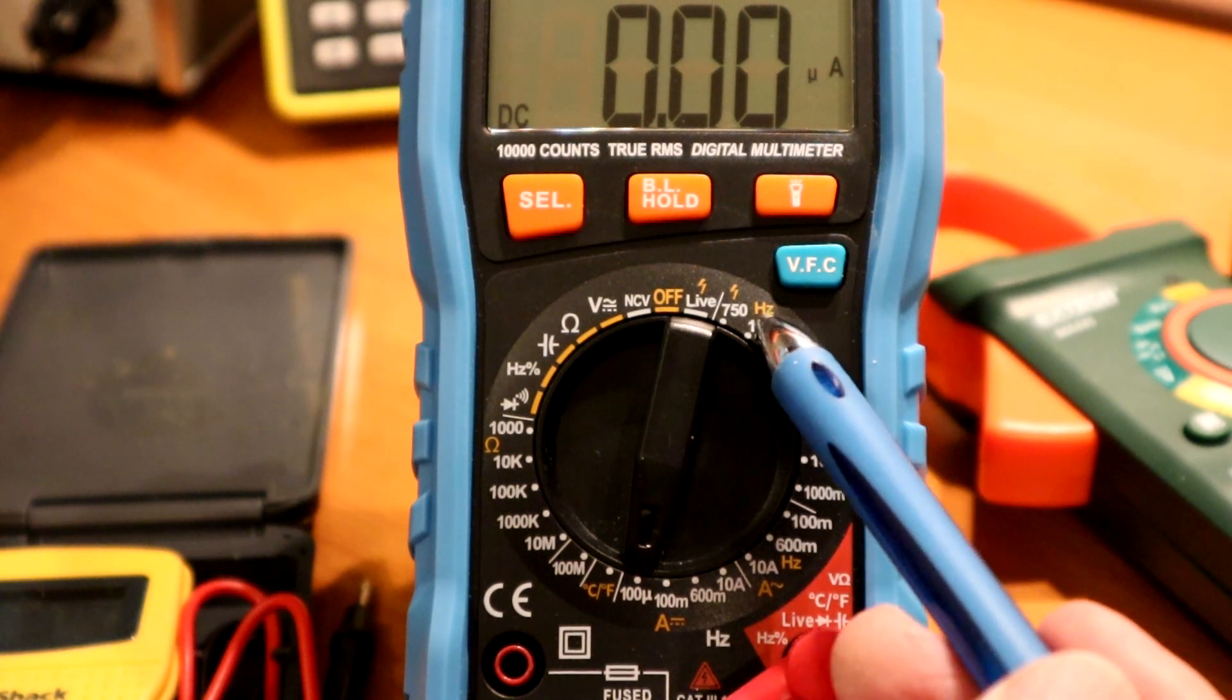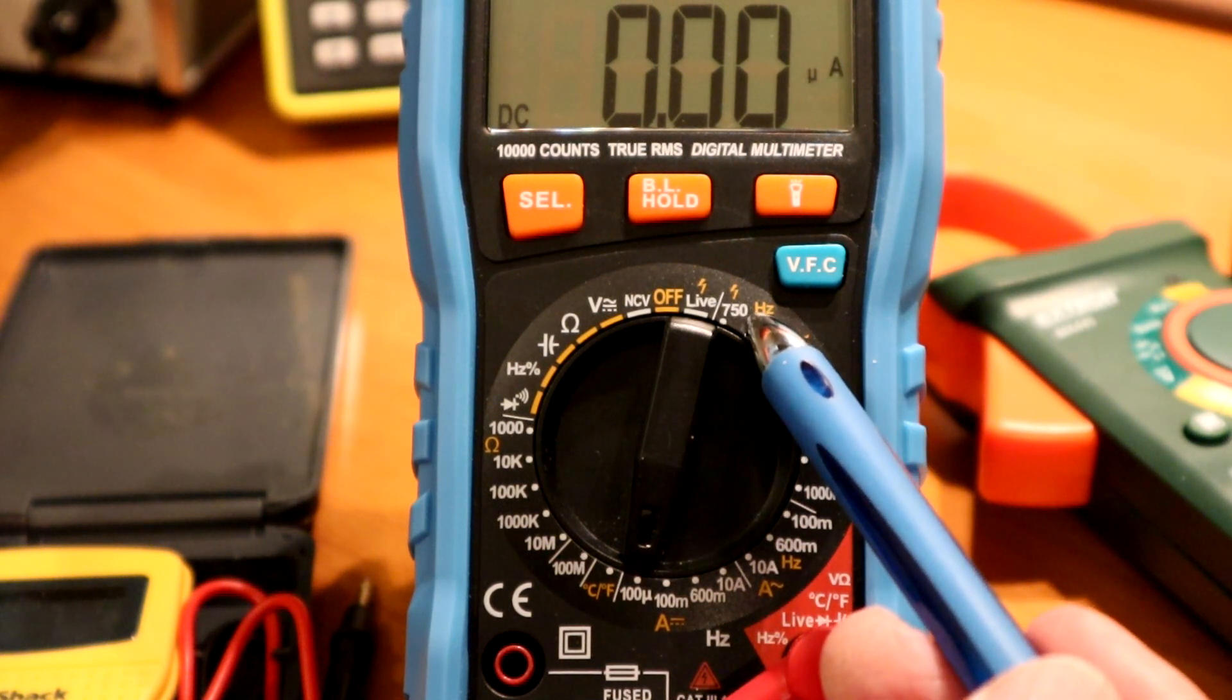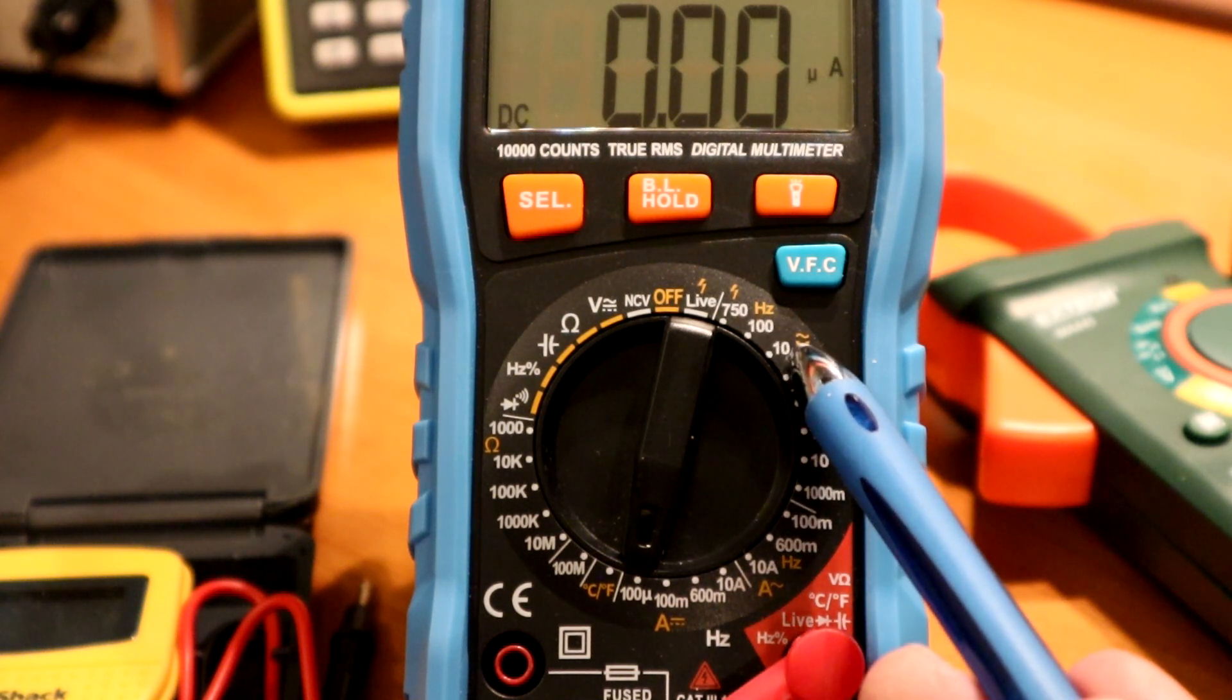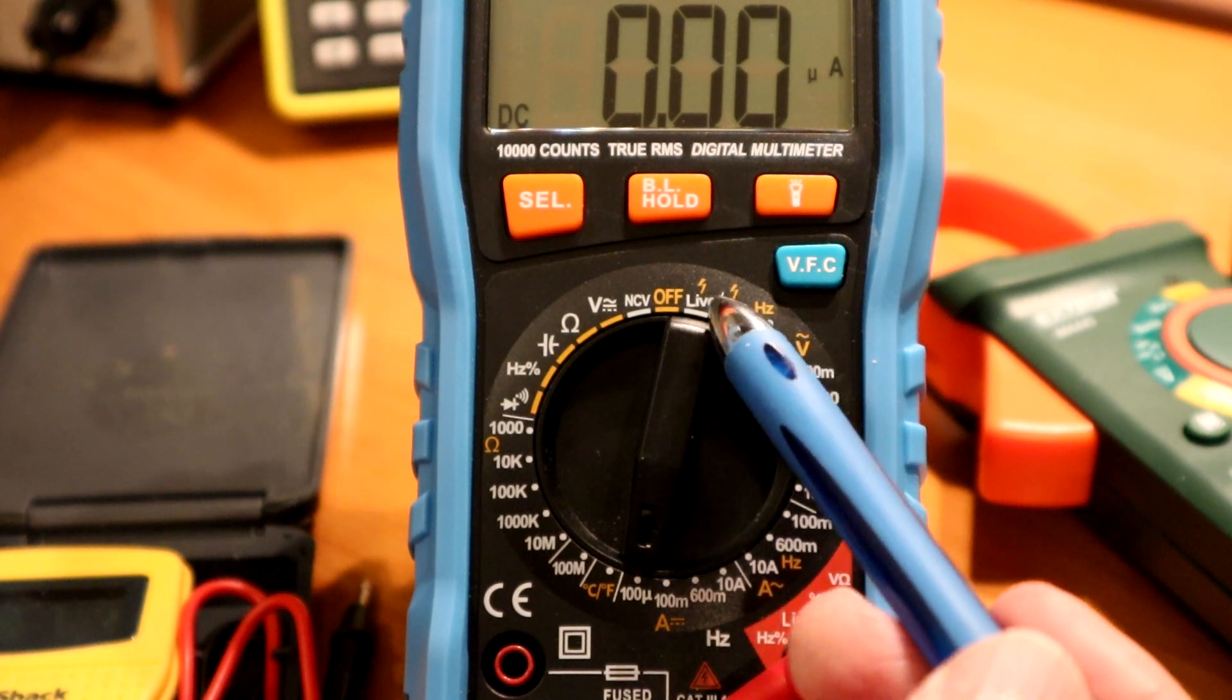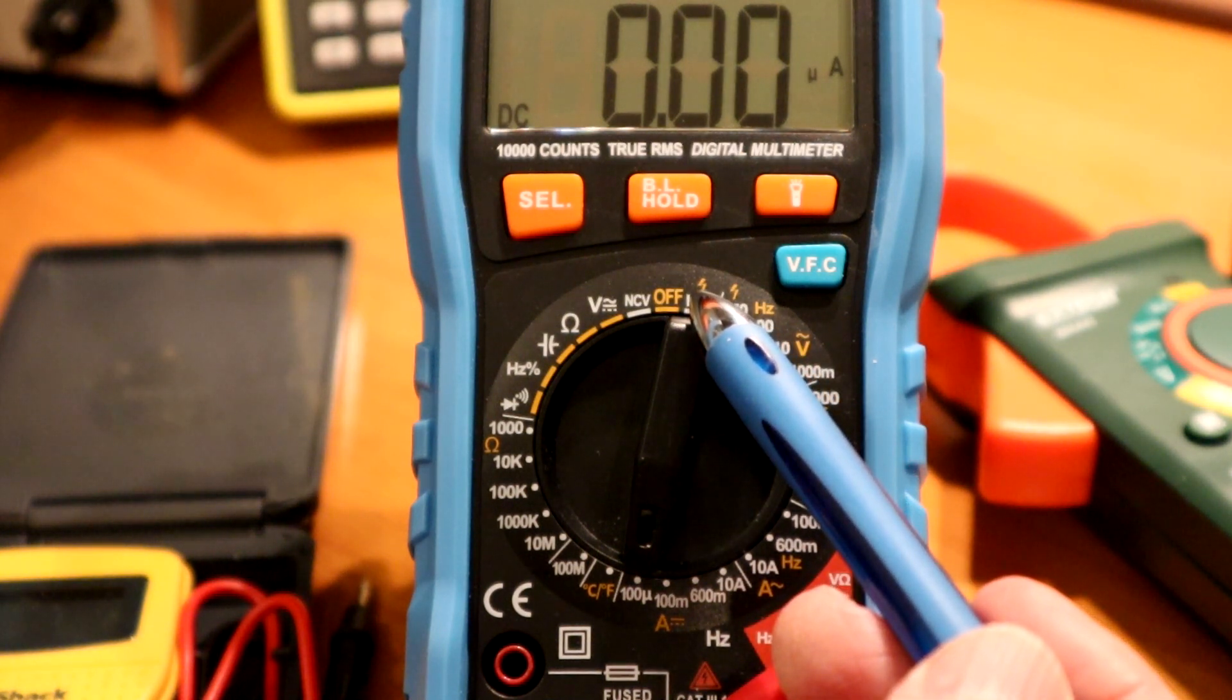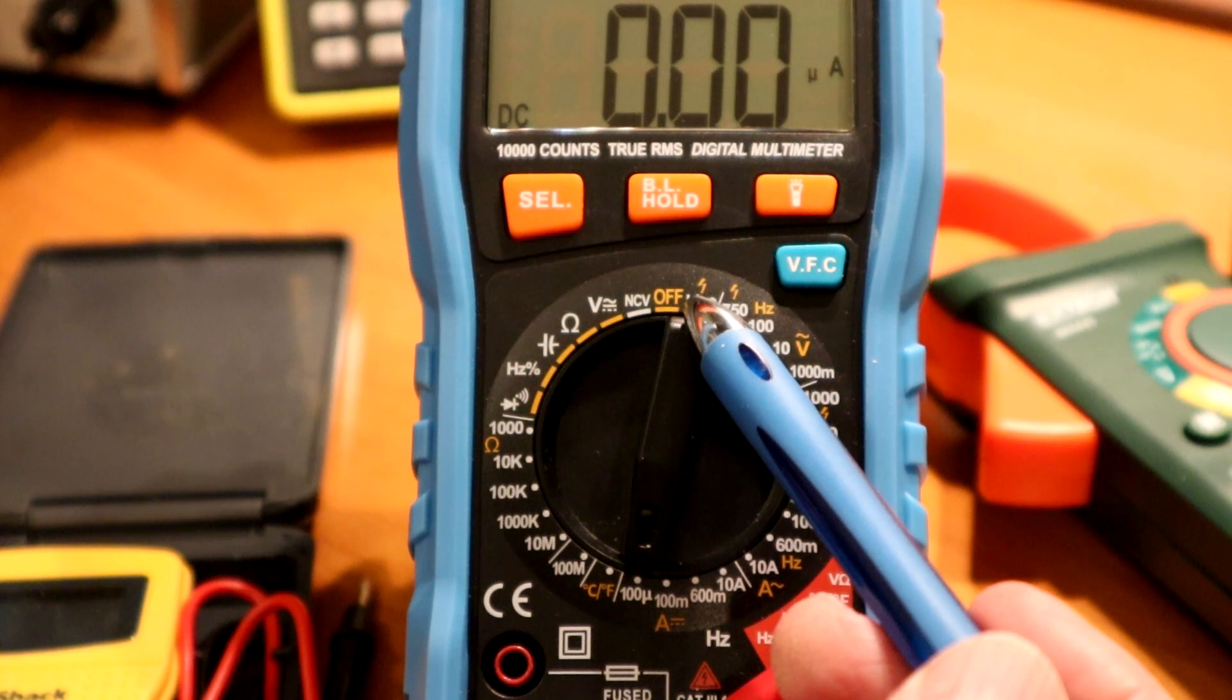You'll notice that this one up here actually says Hertz. I think that's because when you're on that range, in this range here, in the AC volts, it will actually read out the frequency over some limited range, of course. And then there is this live setting, which is used somewhat like the non-contact voltage mode, but with a contact with a probe to check for live circuits.